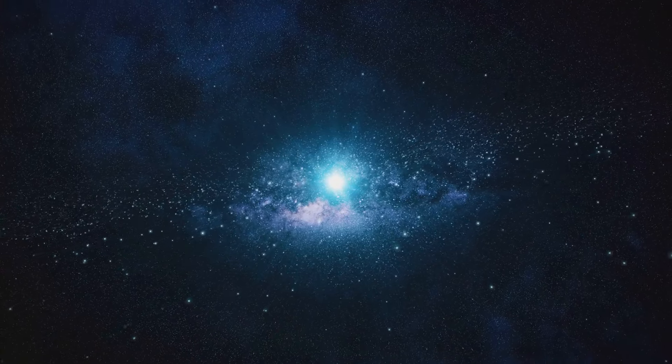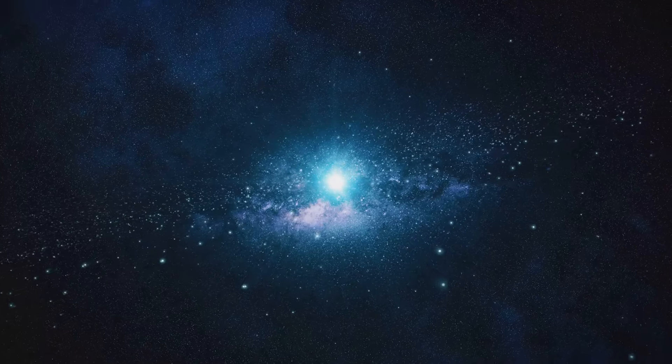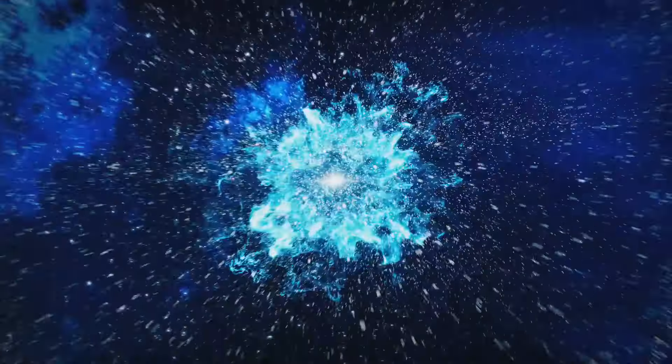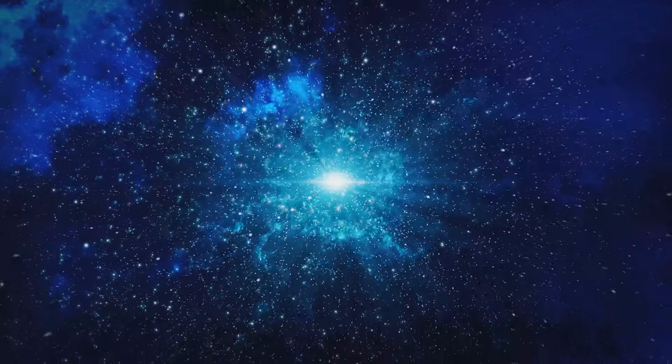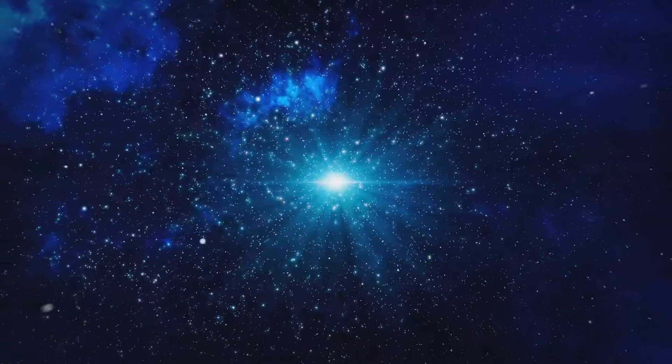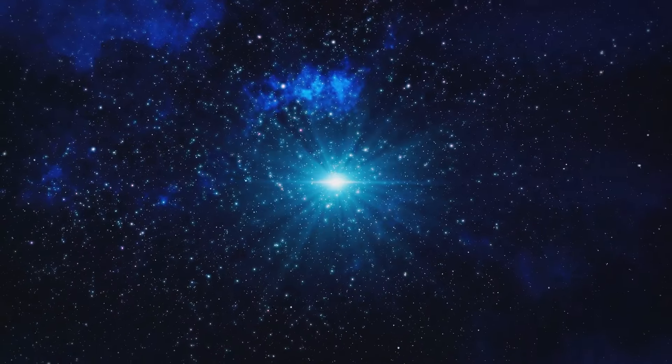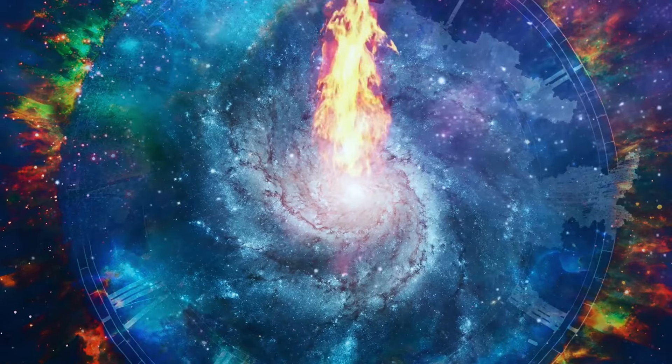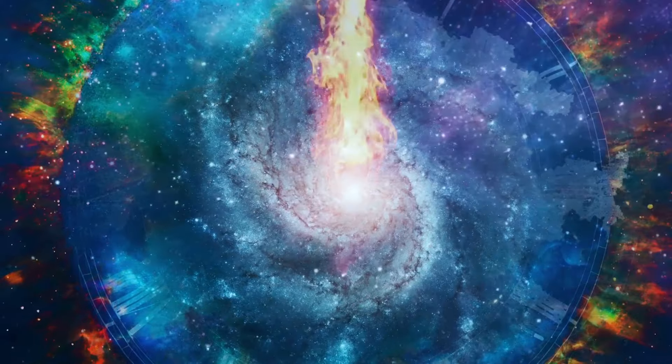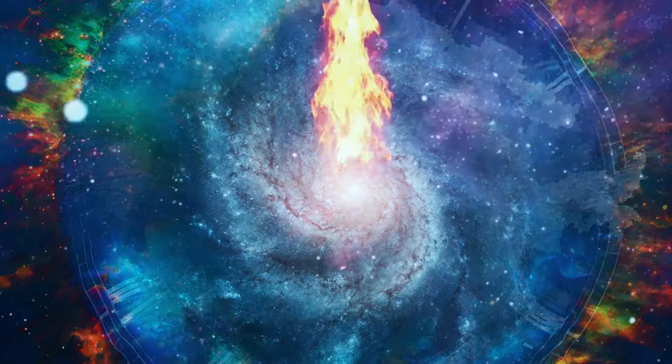At the core of the oscillating universe theory is the concept of gravity. As we know, gravity pulls things together. So, in this model, after the universe expands, gravity eventually slows this expansion and pulls everything back together in a cosmic crunch. But this isn't the end. The theory suggests that this crunch then sparks another Big Bang, creating a new universe. And so, the cycle continues, potentially forever, like an eternal cosmic phoenix.